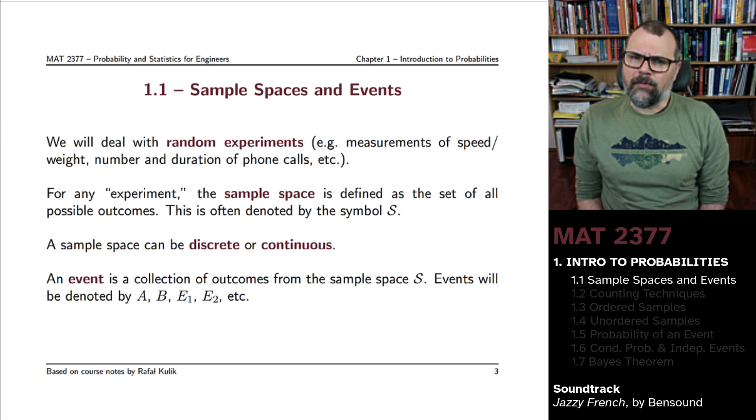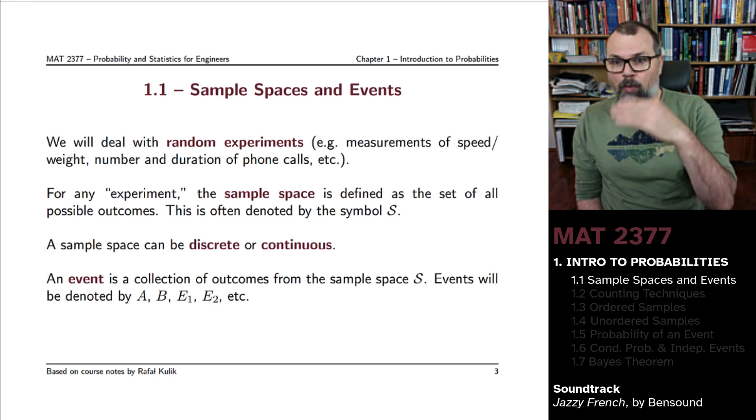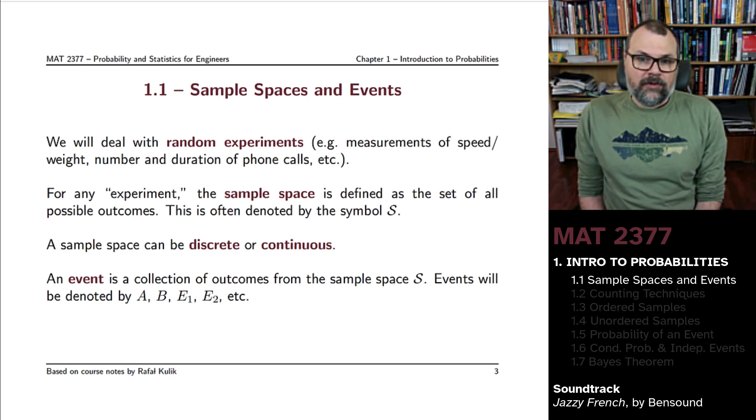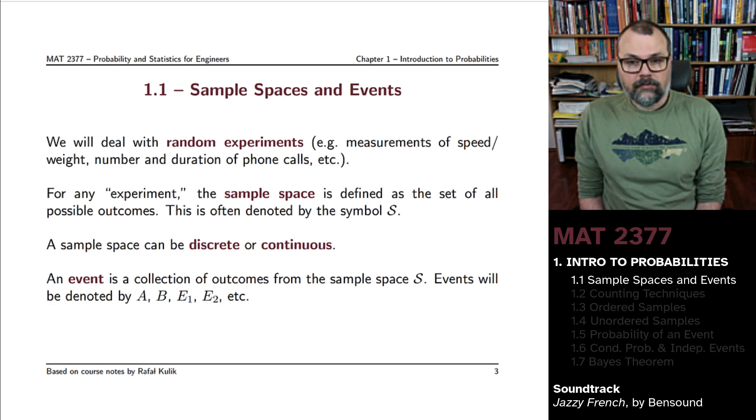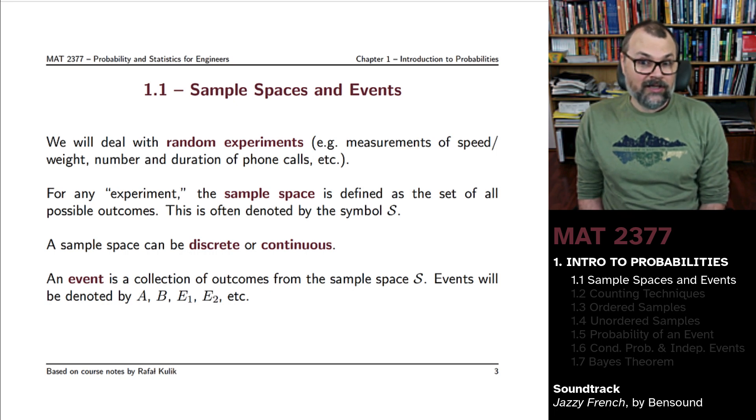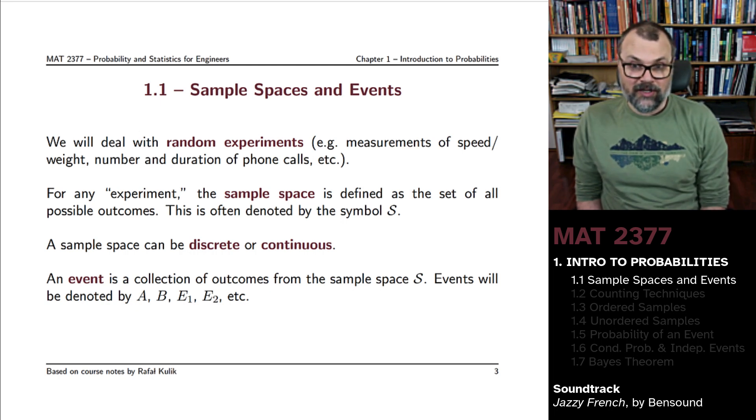When you're looking at the measurement of someone's height, you might say there's a continuum of potential values, but if you go down at the subatomic level, Planck's length h makes it so that there's only a finite number of heights that somebody could have.